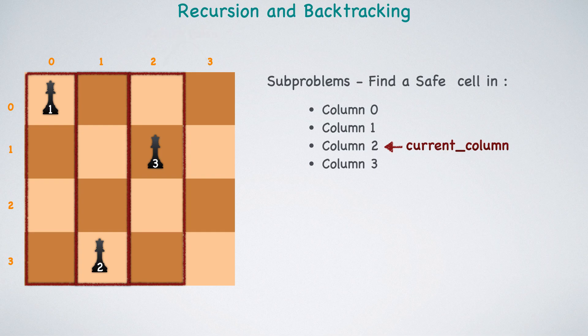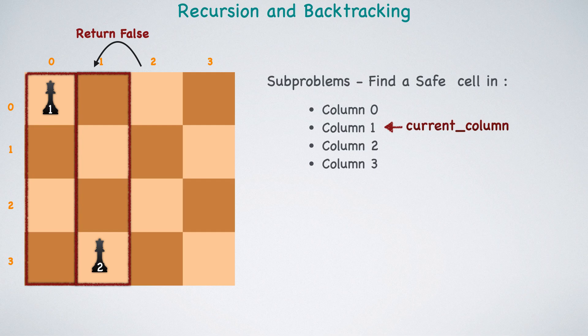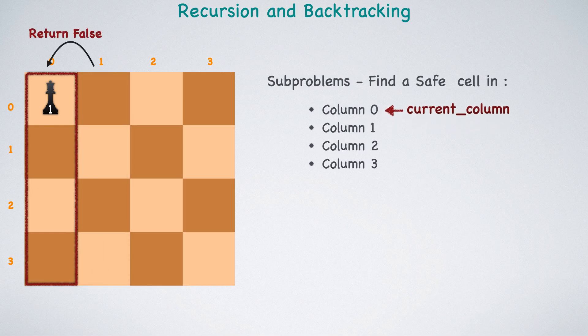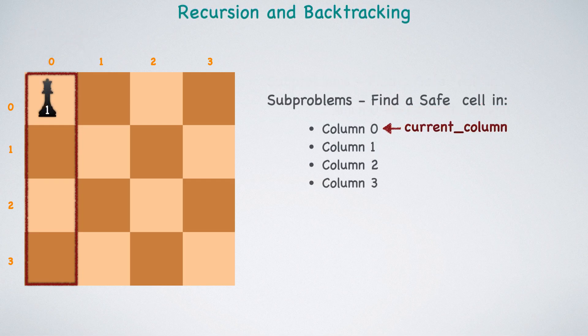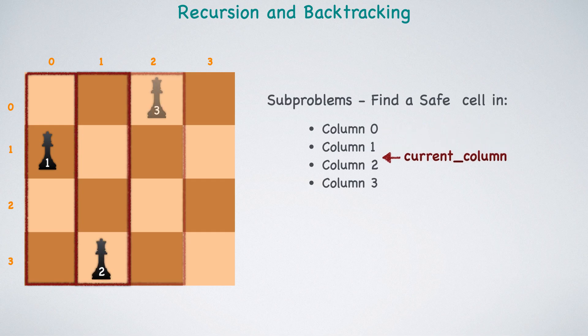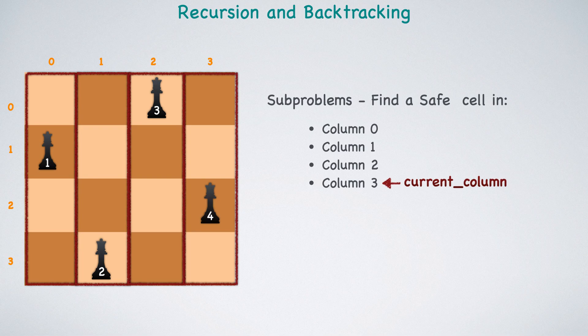We will re-attempt to place the third queen, but none of the cells are safe. We will backtrack by removing the third queen and returning false to the calling function of the second column. The second queen has run out of options. We will backtrack by removing the second queen and returning false to the calling function of the first column. We will retry by placing the first queen in the next row. It will repeat the entire process to recursively solve the sub-problems in the second, third, and fourth columns.